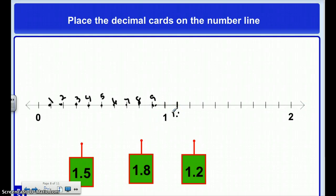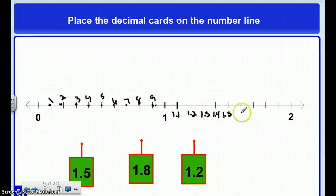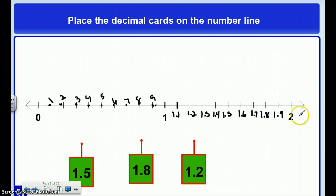Then: one whole and 1 tenth, one whole 2 tenths, one whole 3 tenths, one whole 4 tenths, one whole 5 tenths, one whole 6 tenths, one whole 7 tenths, one whole 8 tenths, one whole 9 tenths, and this would be two wholes, or 20 tenths.